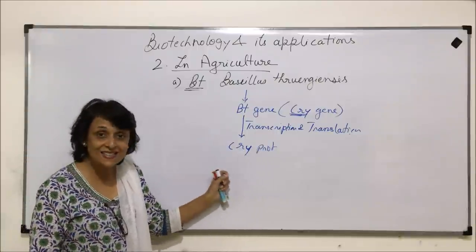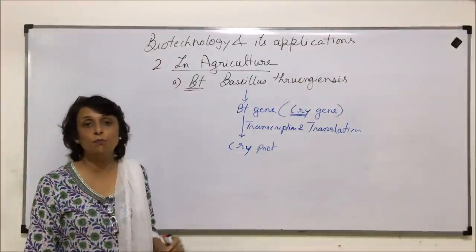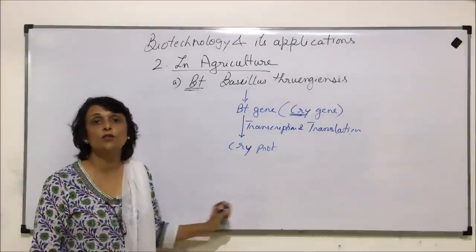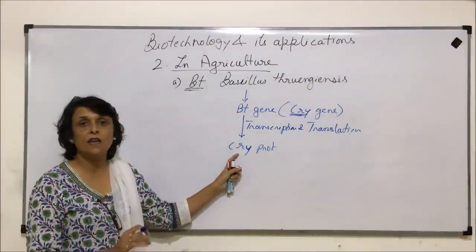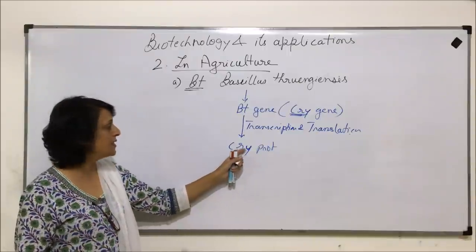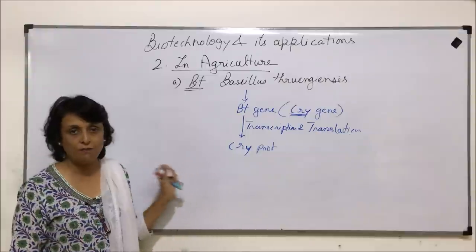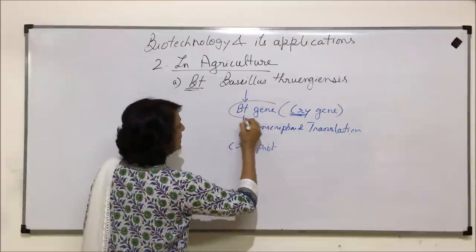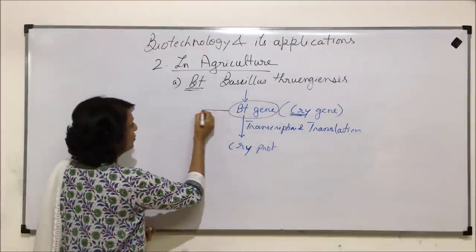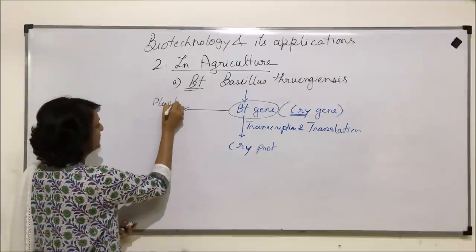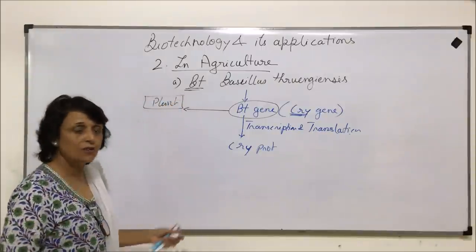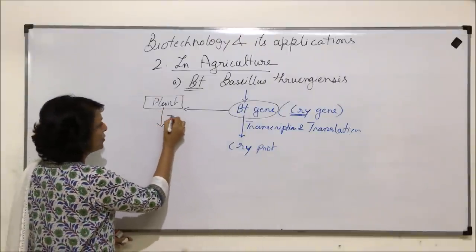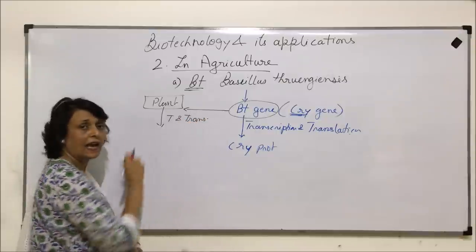This protein is crystalline and it dissolves in alkaline pH. When it dissolves in alkaline pH, this protein turns toxic. In the plant, this crystalline protein causes no harm or damage — it doesn't dissolve because in plants there is no alkaline pH. What scientists have done is isolated this BT gene and introduced this gene into a plant. The gene has now been introduced into the plant, where it also undergoes transcription and translation.